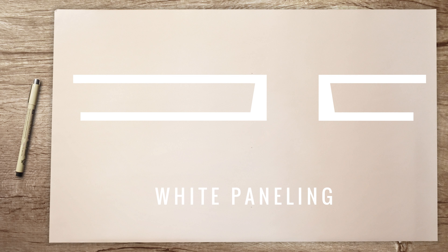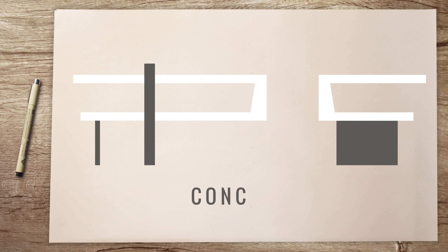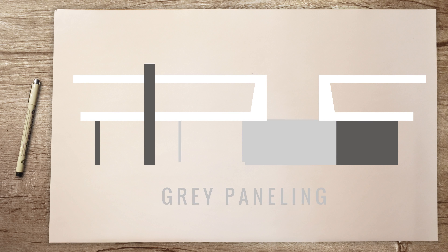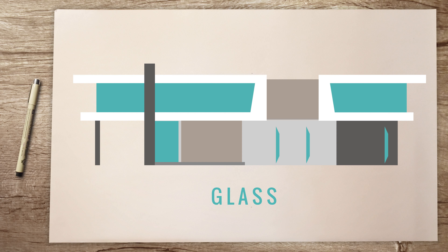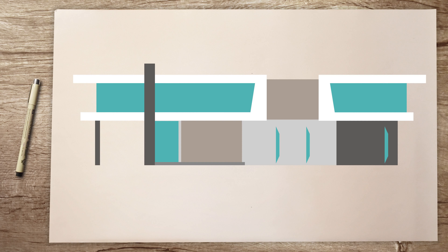Let's take a look at a simple facade study for this house. We have white paneling on the second floor, concrete elements spaced out, gray paneling, wood on the second floor and also on the first floor where the porch is, and glass spaced out. Before getting into the details, I usually do a quick diagram like this and a few facade studies — this helps me understand the balance of materials throughout the whole composition.